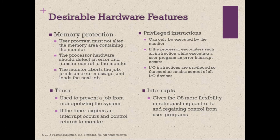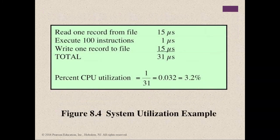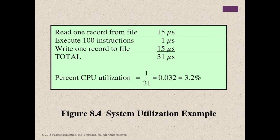Even with the simple batch system, the processor is often idle because I/O devices are slow compared to the processor. Figure 8.4 gives a system utilization example — a program that processes a file of records and performs on average 100 processor instructions per record. In this example, the computer spends over 96% of its time waiting for I/O devices to finish transferring data, which is very inefficient.